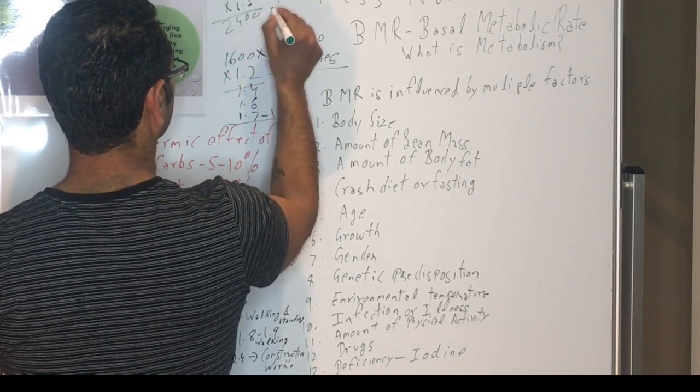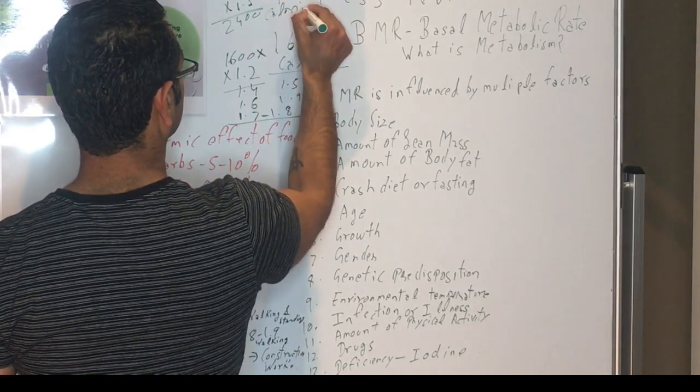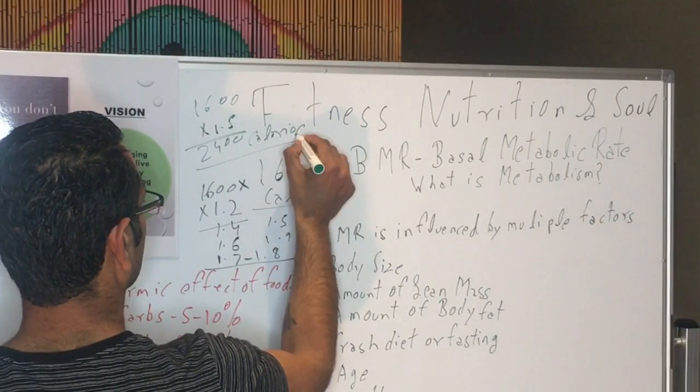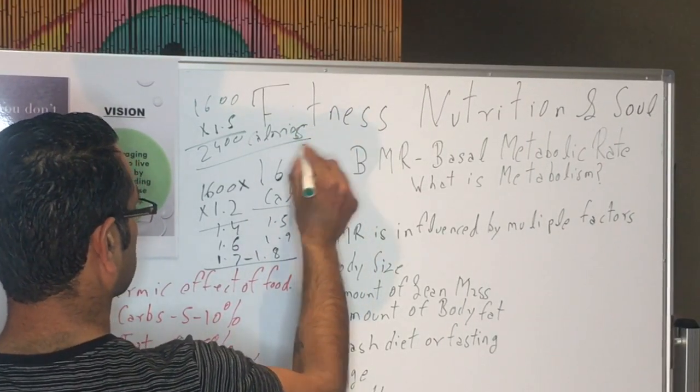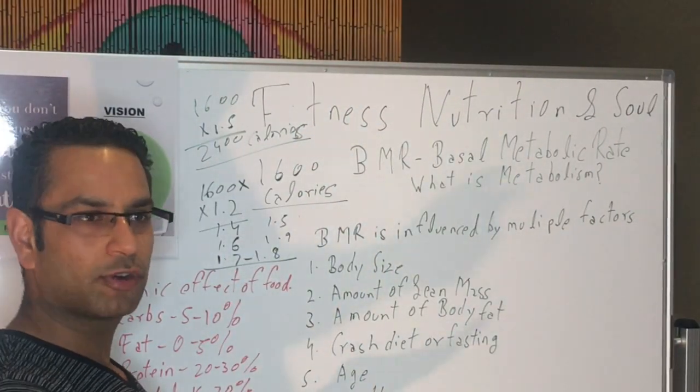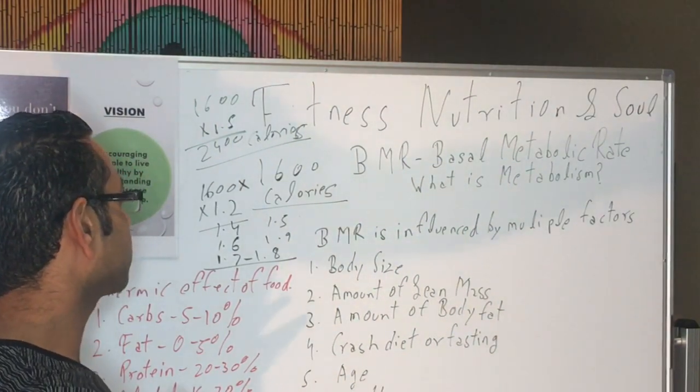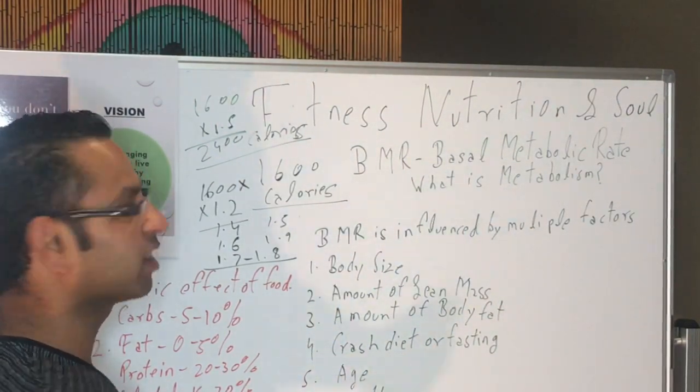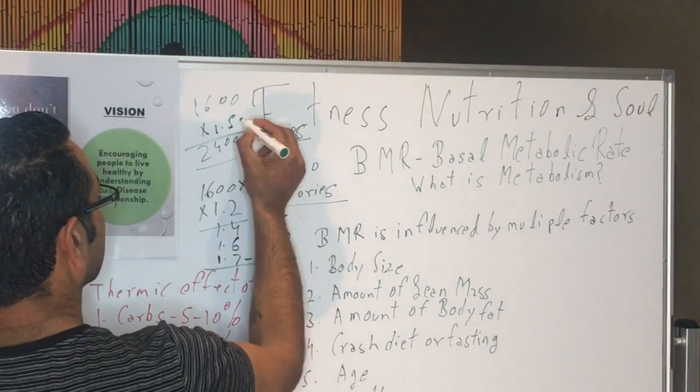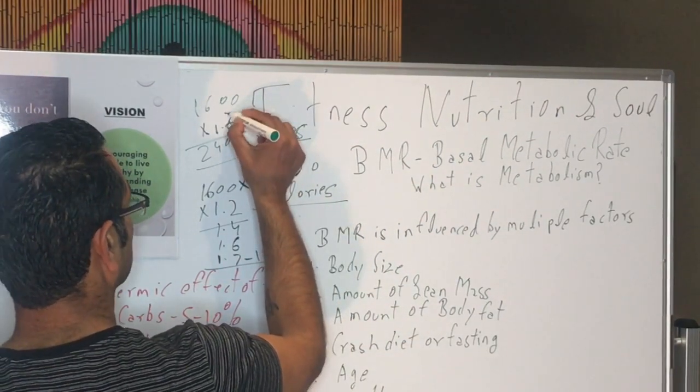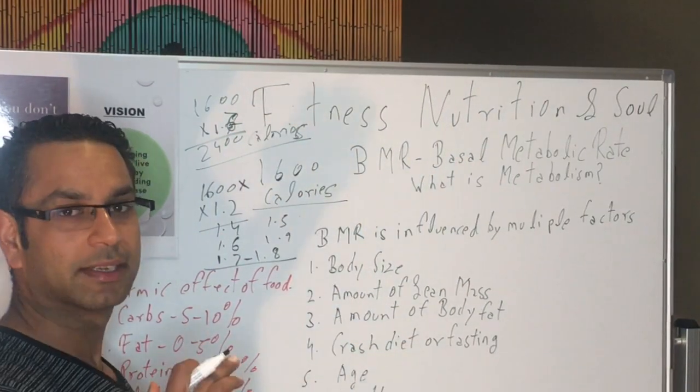So that's the calories you need to maintain the weight. But if you are eating 2400 calories, for example, for two weeks and you're dropping the weight but you don't want to drop the weight, then you go from 1.6 or 1.7 depending upon the body weight.